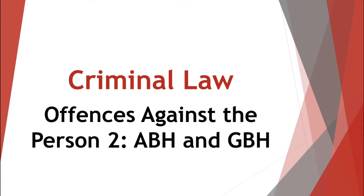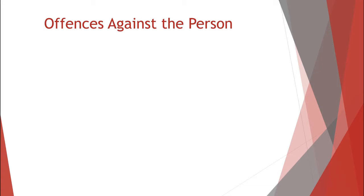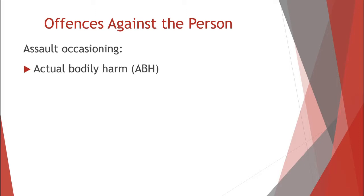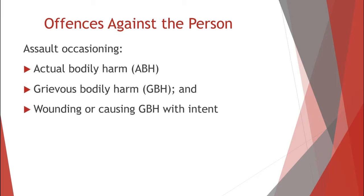Offences against the person 2: ABH and GBH. This is our second tutorial on non-fatal offences against the person. We looked in the first tutorial at assault, battery, and the defence of consent. I want to talk to you now about the more serious offences against the person: assault occasioning actual bodily harm, commonly referred to as ABH, grievous bodily harm commonly referred to as GBH, and wounding or causing GBH with intent. We will begin by looking at the least serious of those offences and graduate up to the most serious offence.